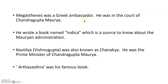Megasthenes was a Greek ambassador who stayed in the court of Chandragupta Maurya. He came from Greece to India as an ambassador and wrote a famous book called Indica, which is an important source of information about the Mauryan administration.